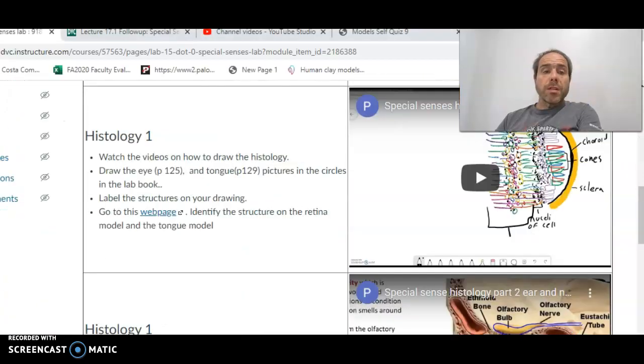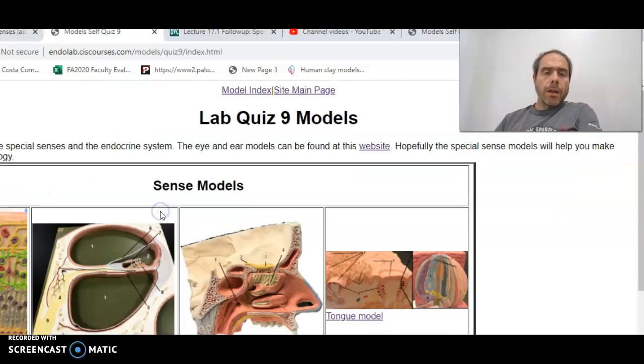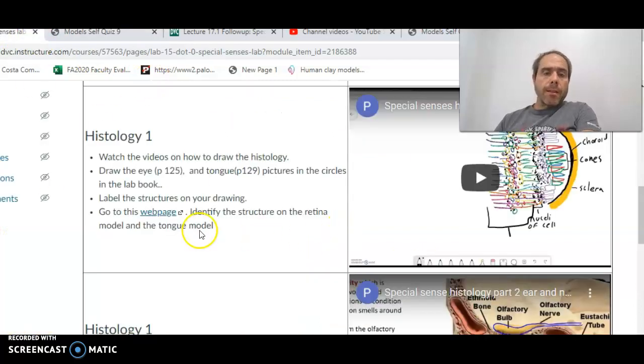We then have two parts of histology. We have two parts here and two parts down here. And when you're done, go to my webpage, find the structures on the retina and the tongue model. So here are the histology models. So you're basically finding the structures. This is the retina model being shy on the side right here. And the models are basically to help you with these structures. But do the histology drawings.